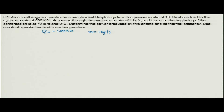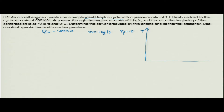It is a simple ideal Brayton cycle and the pressure ratio is given: R_p equals 10. The first step is to draw the T-s diagram for the Brayton cycle, where the x-axis is entropy and the y-axis is temperature.